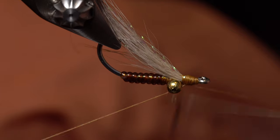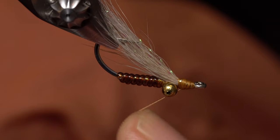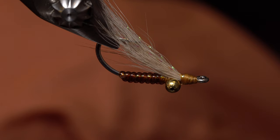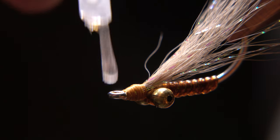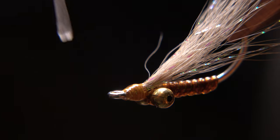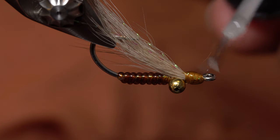To complete the fly, do a three or four turn whip finish, seat the knot well, and snip your tying thread off close. A liberal coating of Sally Hansen's to all the exposed thread wraps ensures they won't come unraveled, and helps to prevent the wing from pulling out.